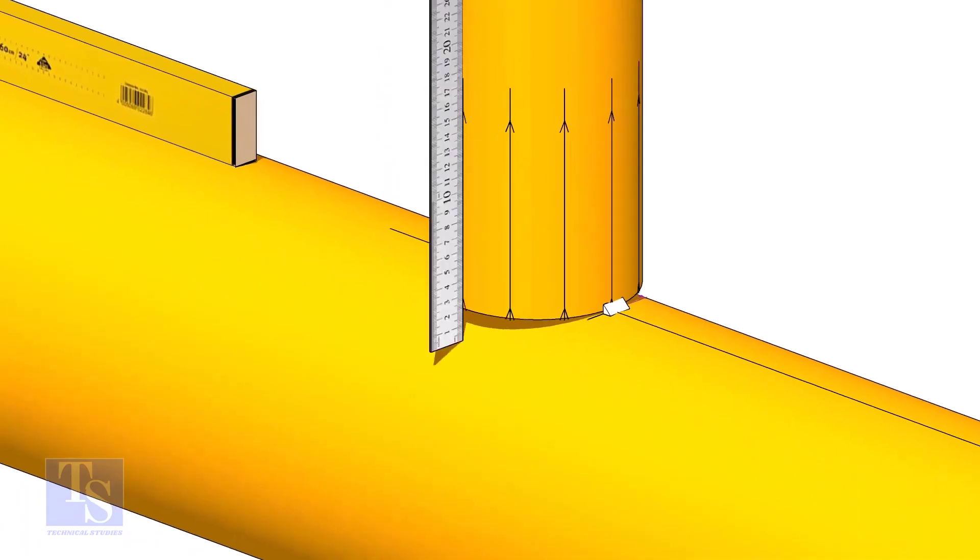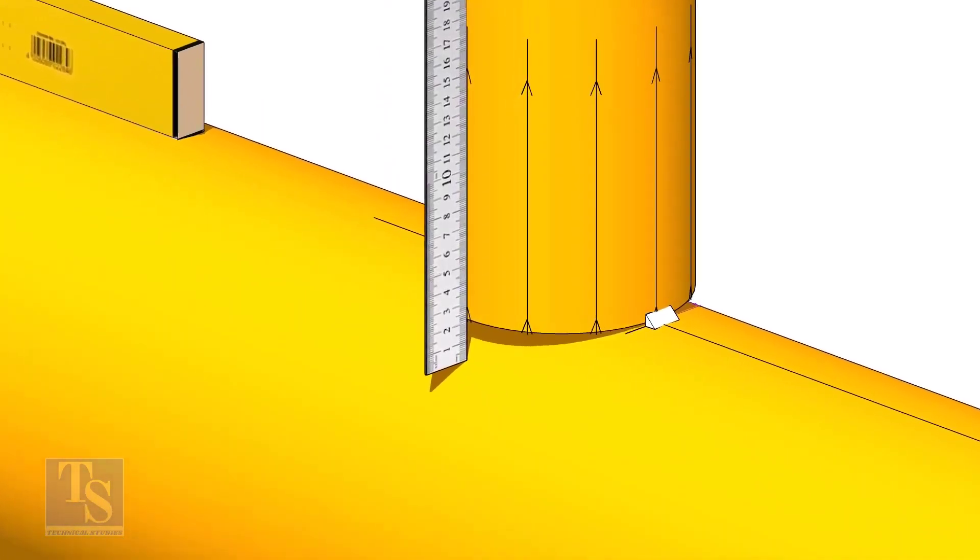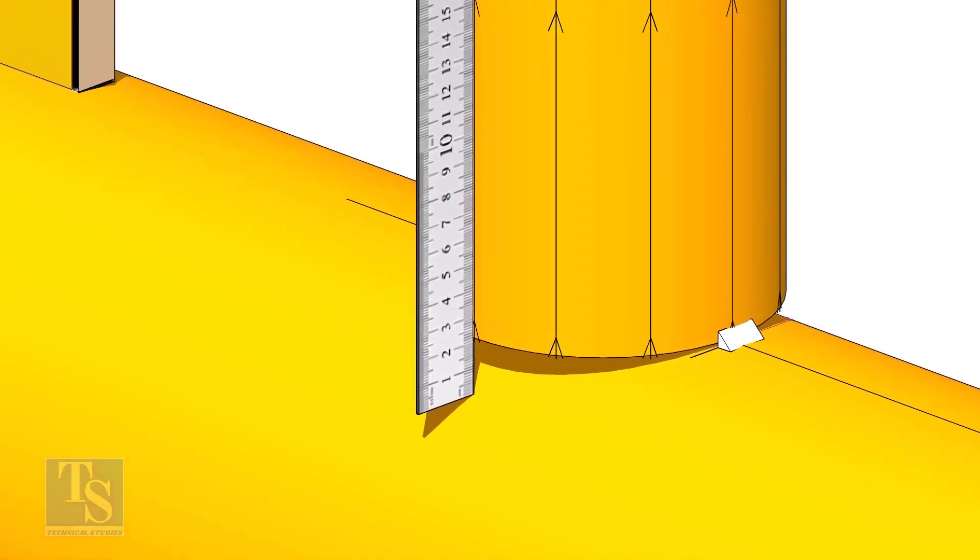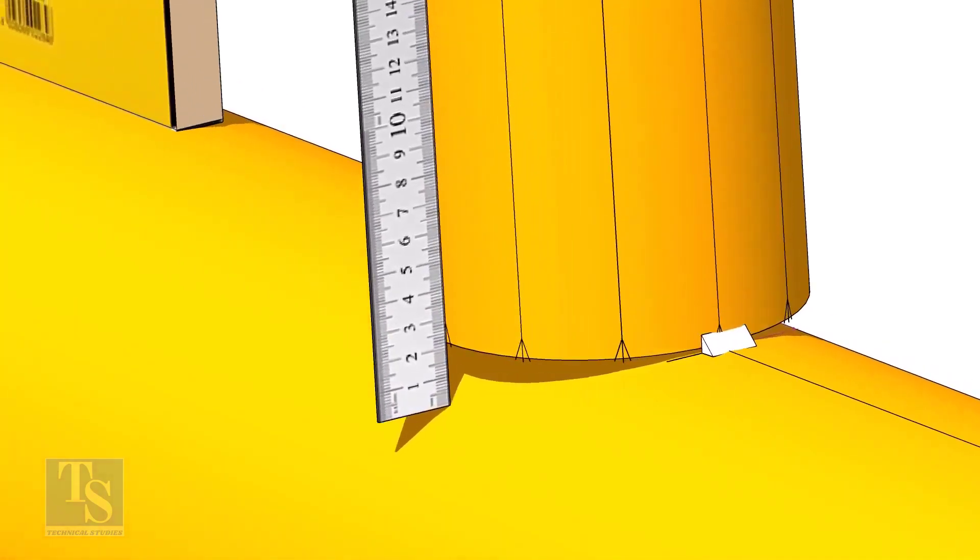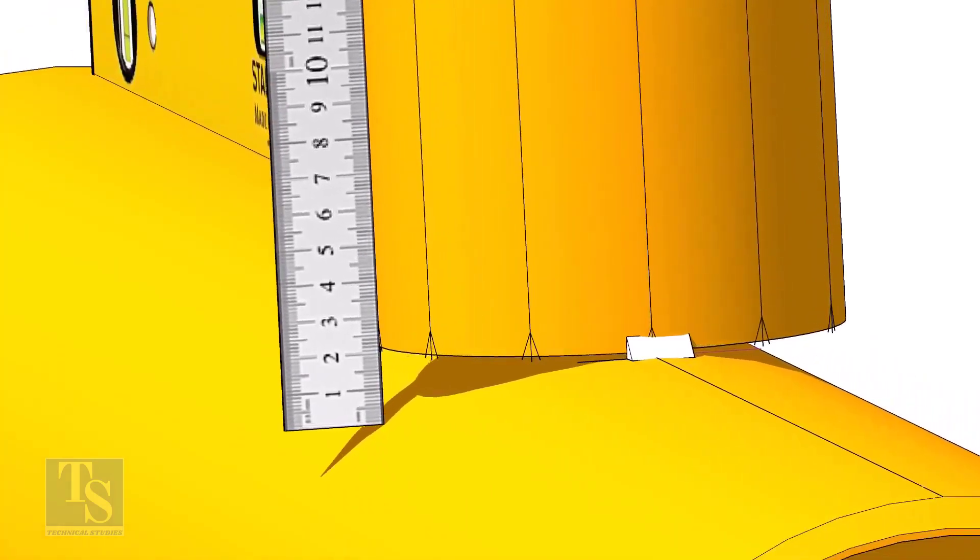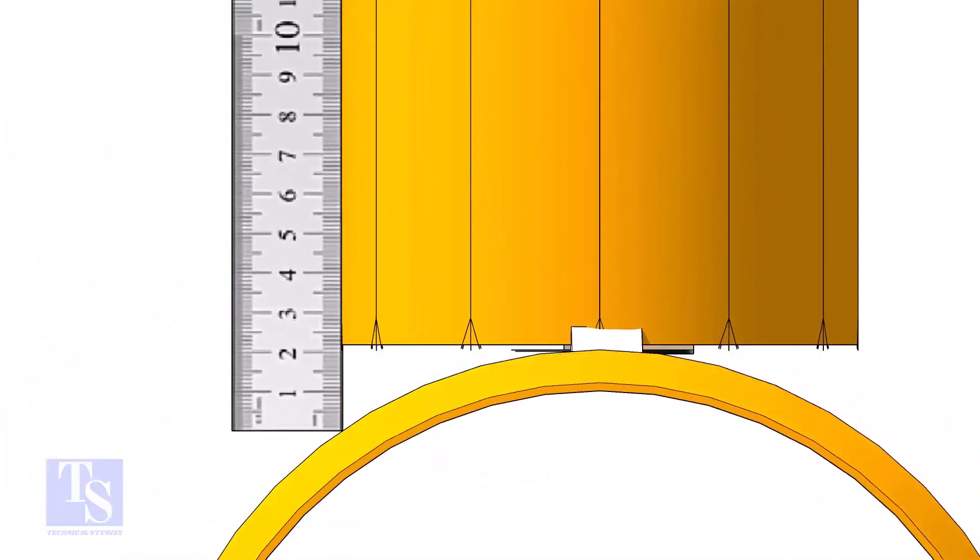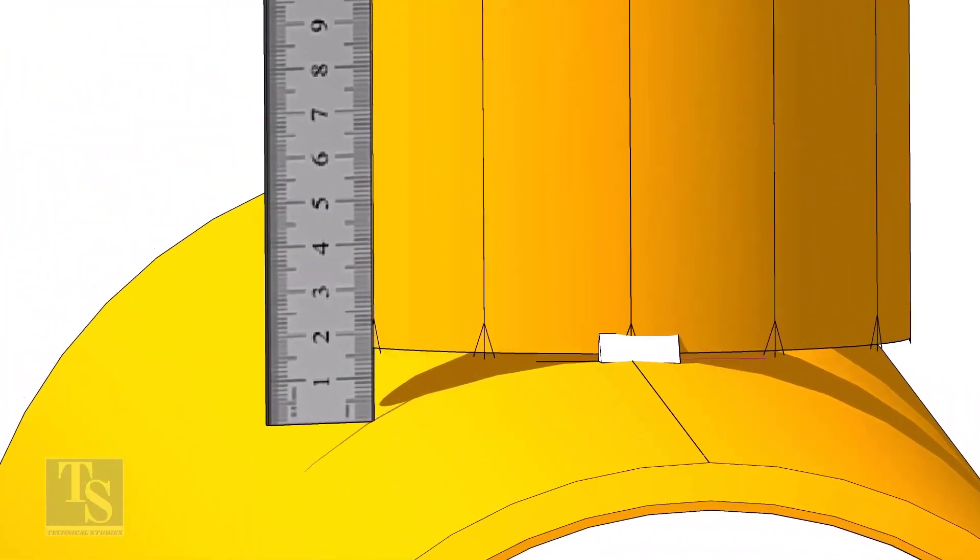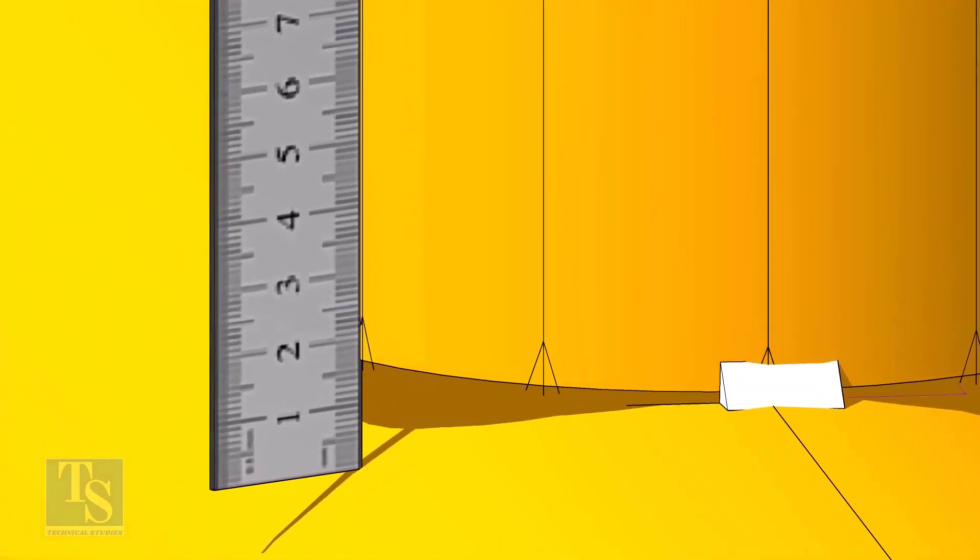Check the gap between the header and the branch as shown. When you measure, make sure the scale is vertical and is on the line on the branch pipe. Move the scale to the next vertical marking on the branch. Mark the distance on the branch from the header. In this case, it is 22 millimeters.